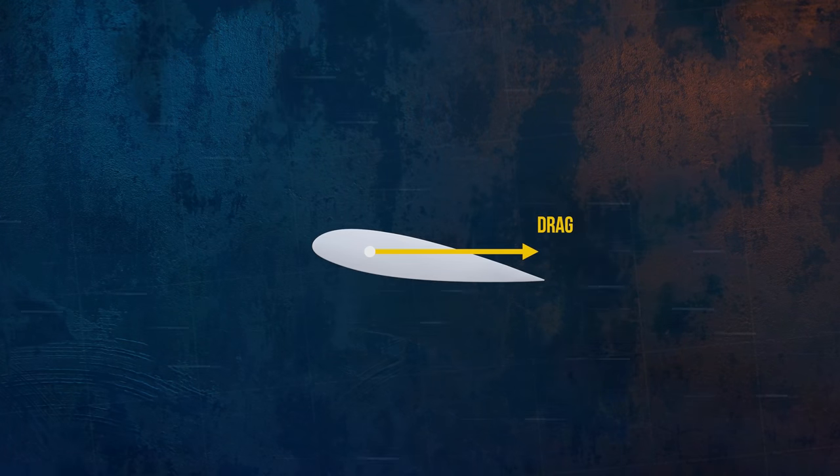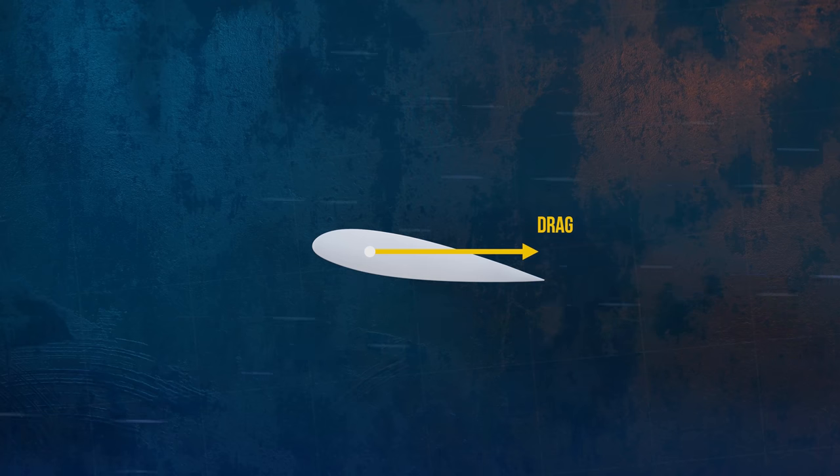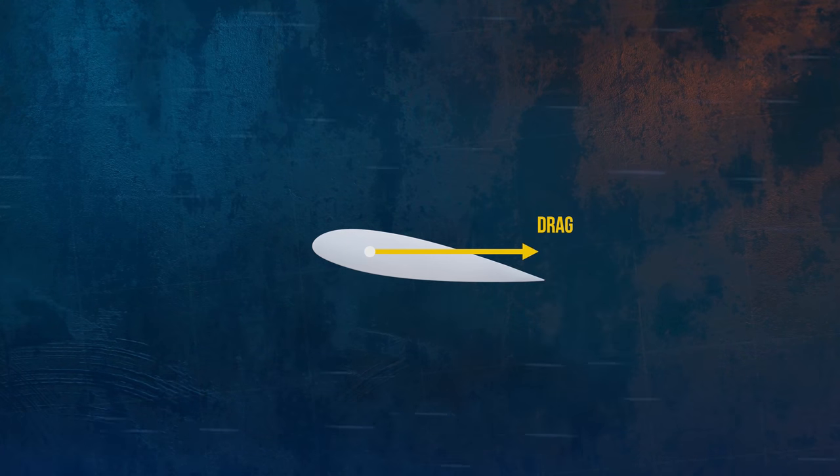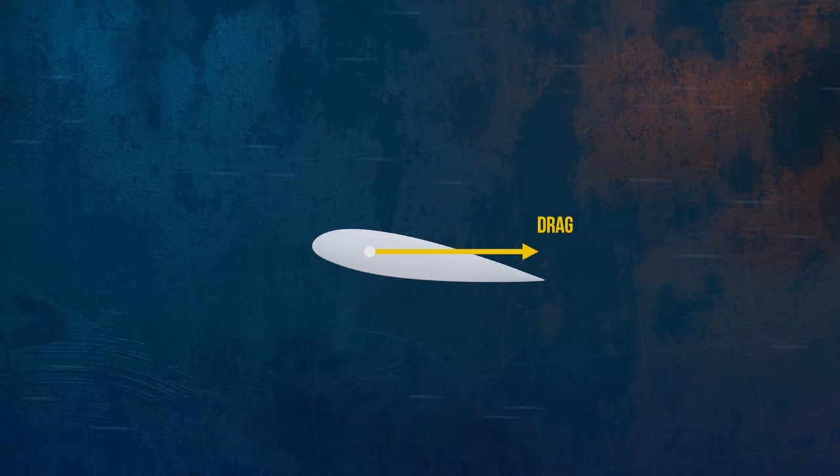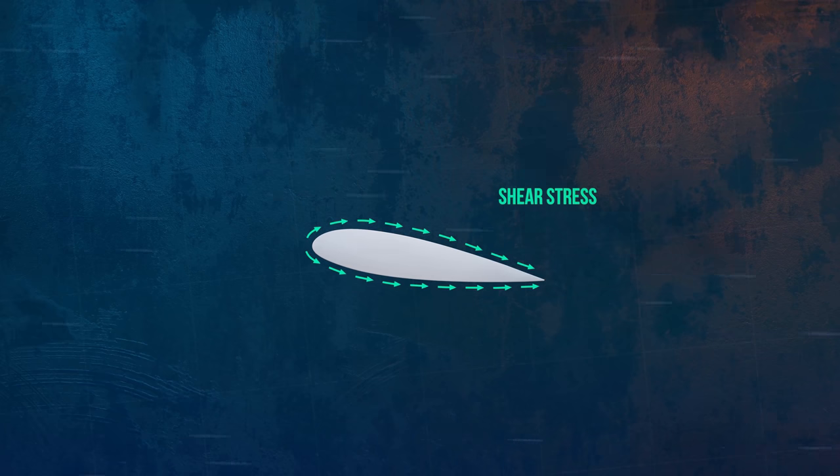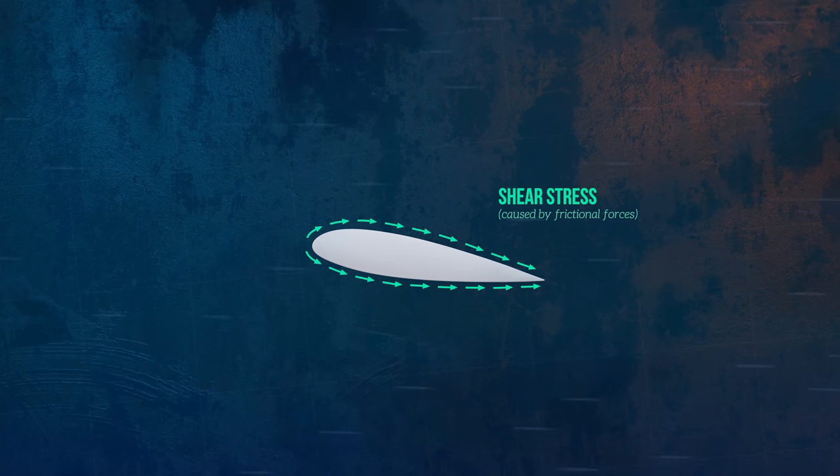Drag forces are caused by two different types of stress, which act on the surface of an object. First, we have the wall shear stresses. These stresses act tangential to the object's surface, and are caused by frictional forces that arise because of a fluid's viscosity.